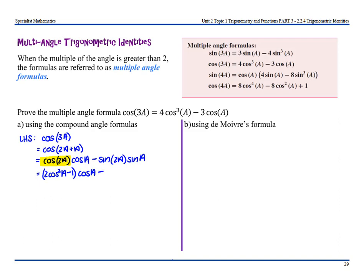Then replace sin(2a) with 2sin(a)cos(a). Expanding the brackets gives 2cos³a − cos(a) minus 2sin(a)cos(a) times sin(a), which becomes 2cos³a − cos(a) − 2sin²a·cos(a).